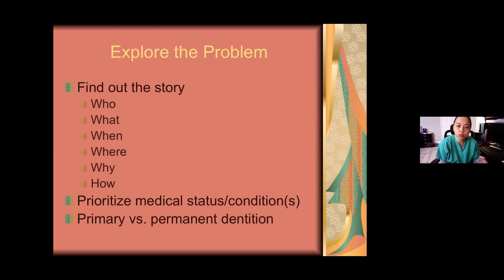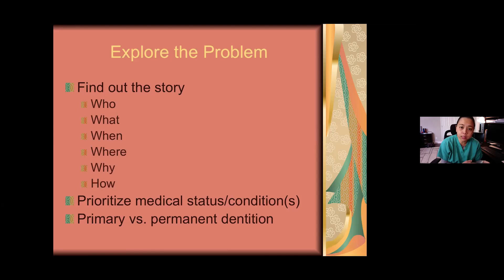When a trauma comes into your chair, you want to prioritize medical status over dental status. After finding out the who, what, when, where, why, and how, you'll do an initial assessment to see if they're stable neurologically — before you jump ahead and say we've got to get this laceration sutured or start the root canal. You also want to determine: is this a baby tooth or a permanent tooth? That's going to dictate how you proceed with treatment and how promptly.